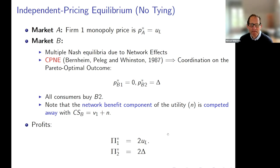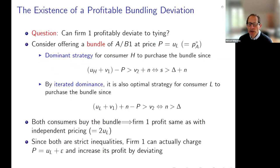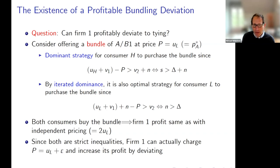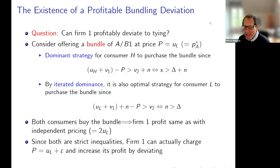Profits with independent pricing are: firm one's profit is 2 times U_L, firm two's is 2 times delta — the quality differential. So now let's think about what happens if you're allowed to bundle. What I want to show is that if we start at this independent pricing equilibrium and allow bundling, firm one has a profitable deviation to introduce a bundle — and in fact only offer a bundle — and that this breaks the independent pricing equilibrium.